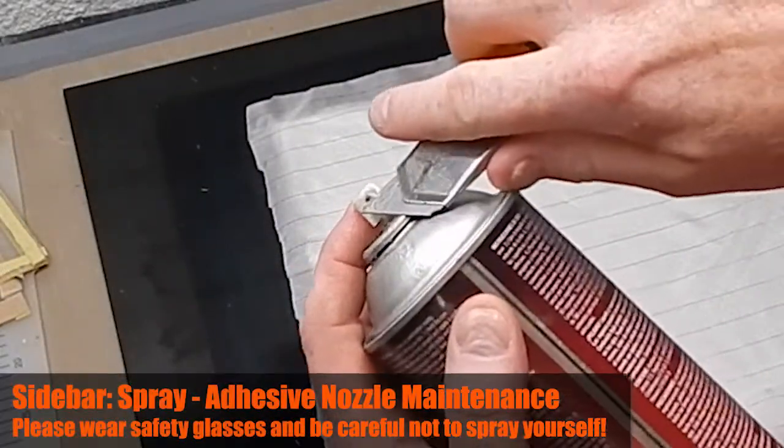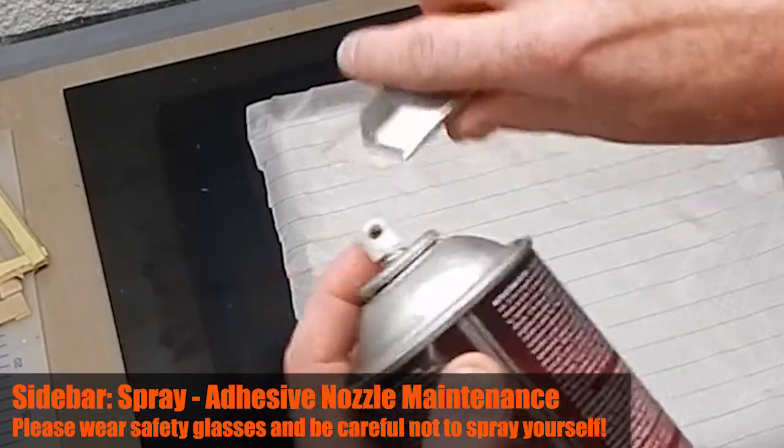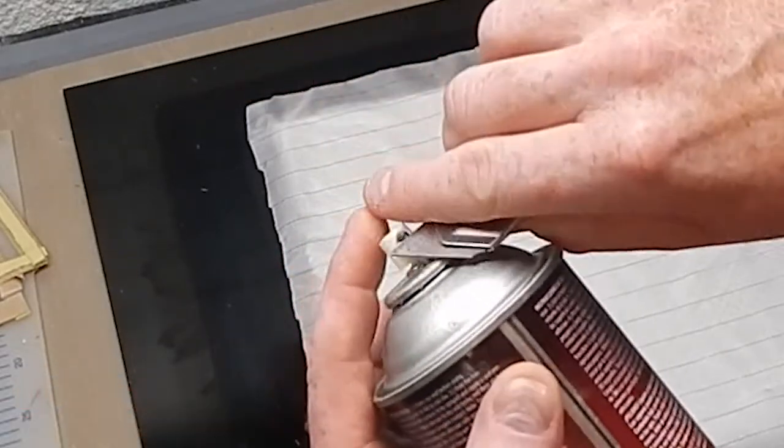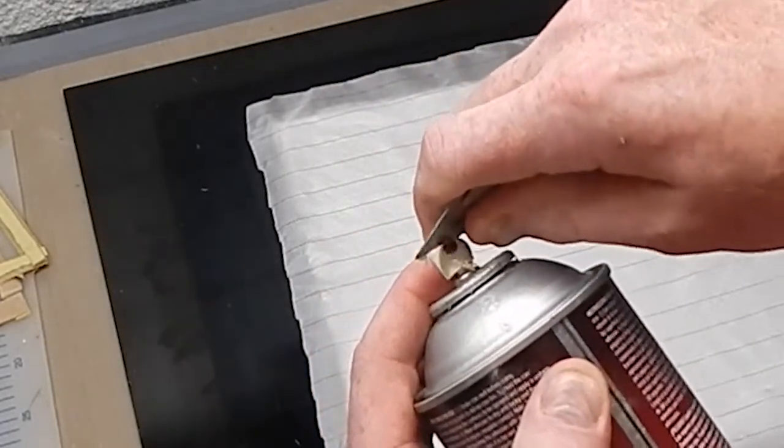So I'm going to clear the nozzle here, being very careful not to squirt myself in the face with the adhesive. This should return it to a nice even spray pattern because big clumps of spray glue are never a good thing to have around.